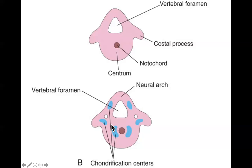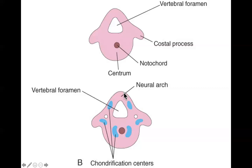Interestingly, there is not a well-defined spinous process or transverse process at this point in time — the mesenchyme model does not have well-defined processes. The spinous process and transverse processes are actually formed during chondrification. They extend out as the cartilage proliferates. It's pretty cool.